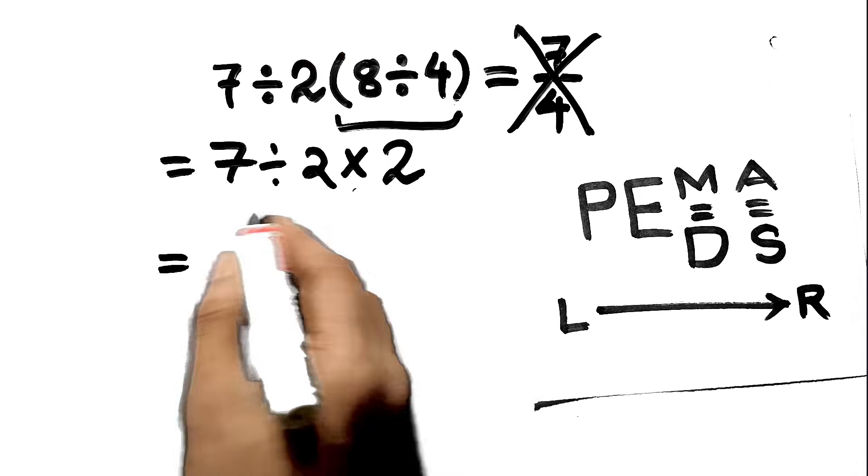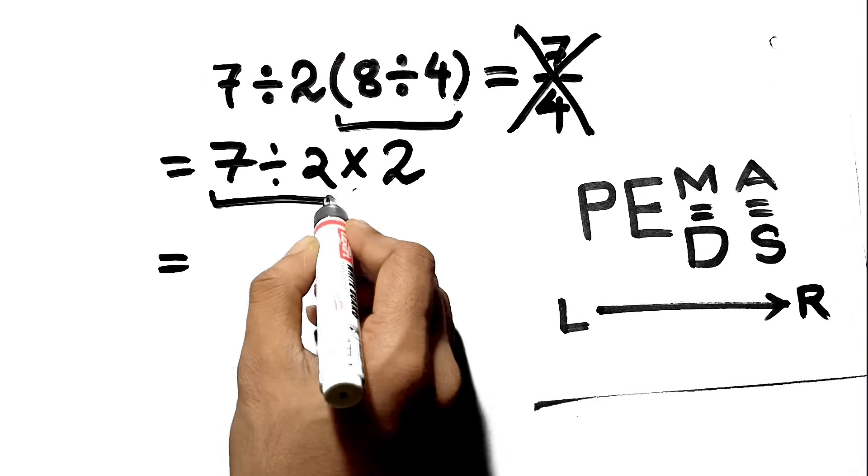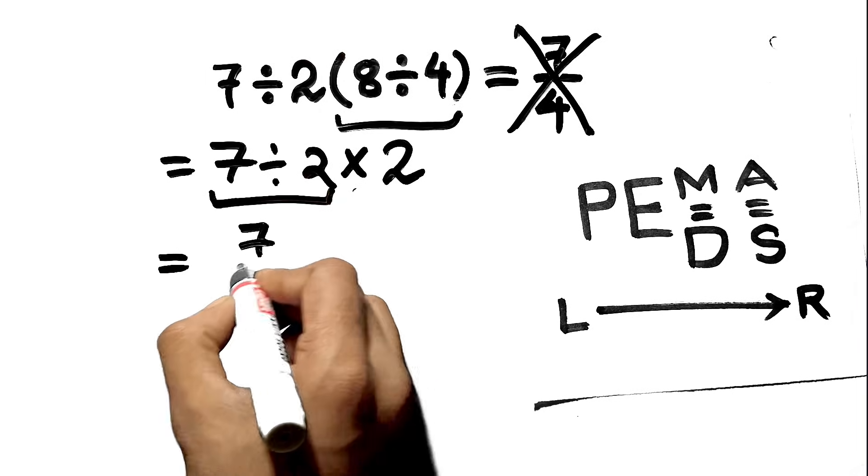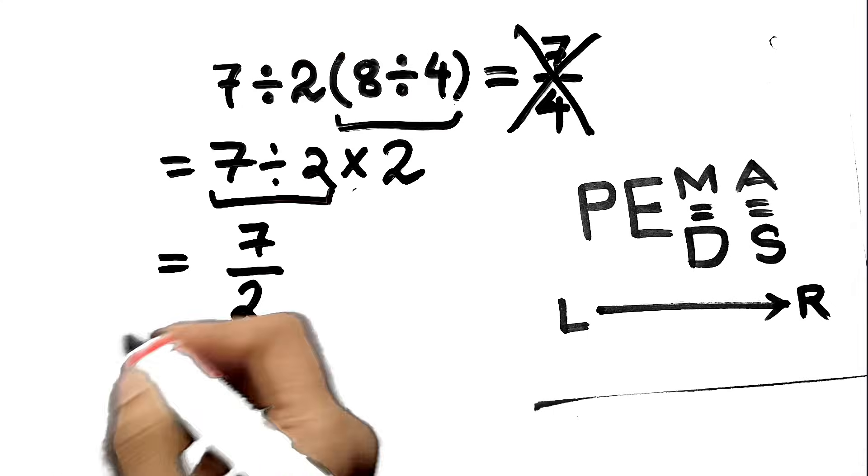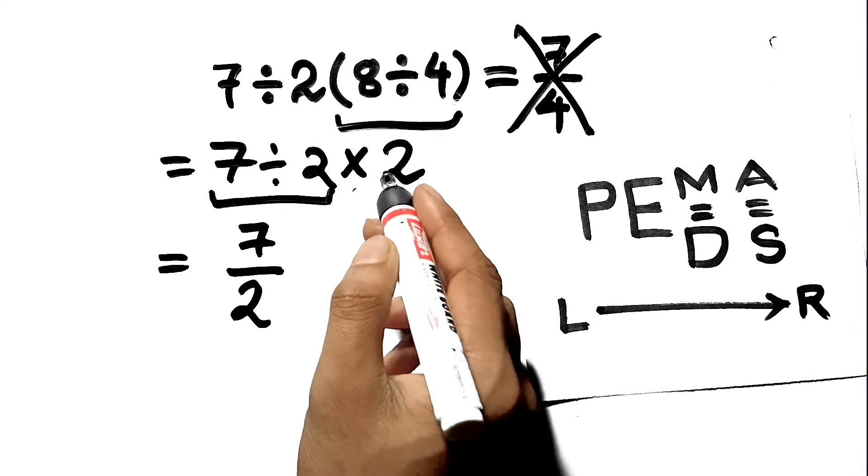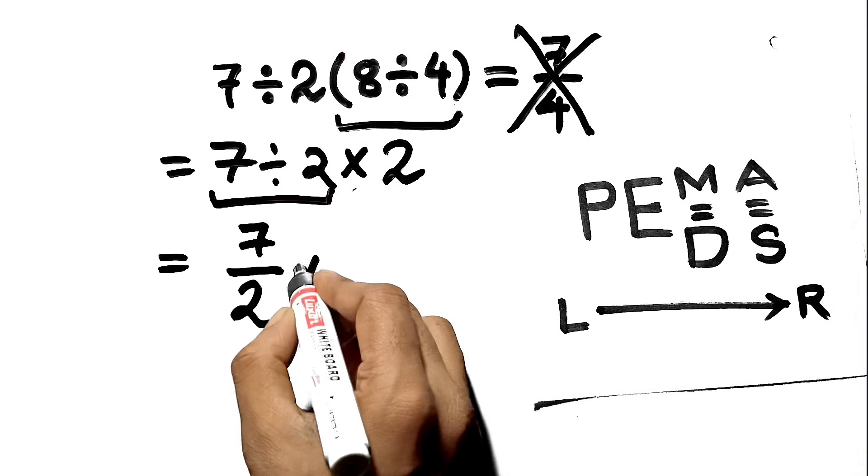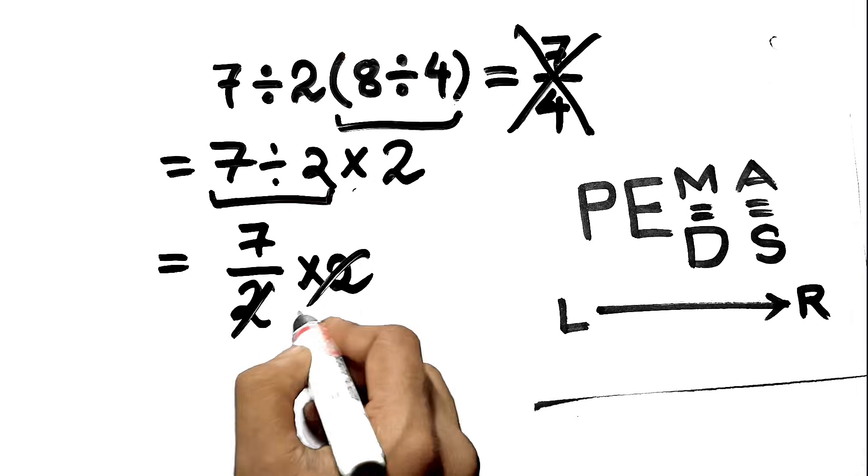Step 2, starting from the left, 7 divided by 2. That's 7 halves or 7 over 2. Step 3, multiply that result by 2. 7 halves times 2 is 7. And that's it.